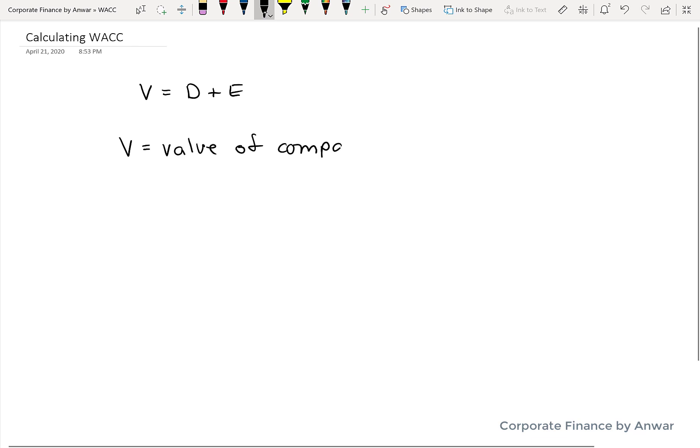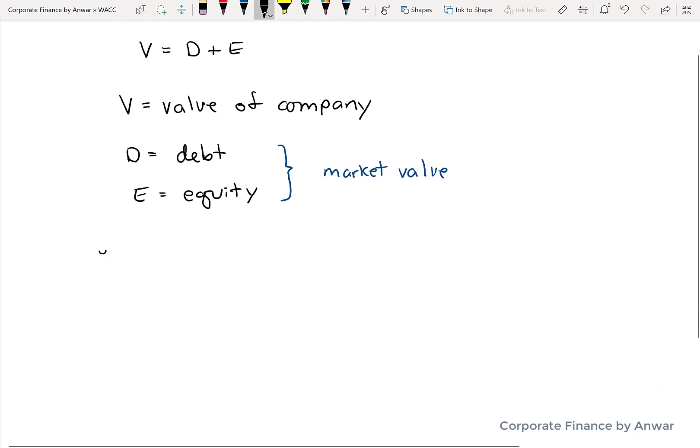So the first thing before we get to that is the formula for the value of a company. V is equal to D plus E. V is the enterprise value of the company, D is the debt, and E is the equity. By value of the company, essentially if you were going to buy the company, what would you have to pay? Now the important concept in this formula is that both debt and equity are going to be market value. It's not the book value, but what it's currently worth right now.